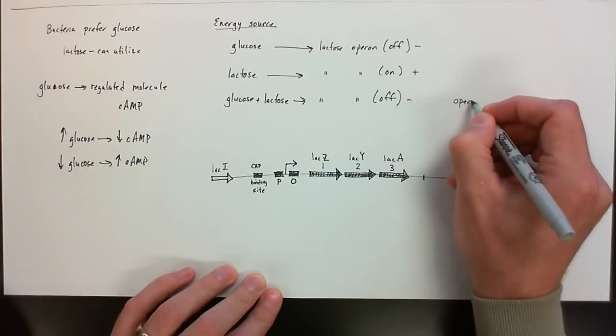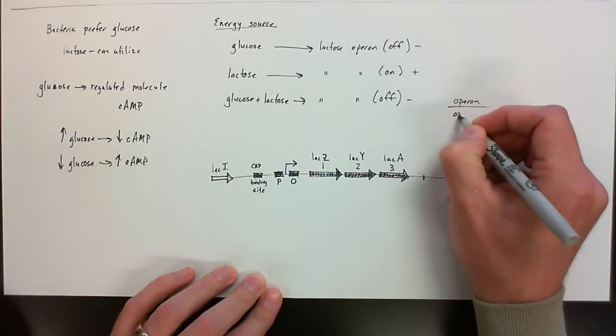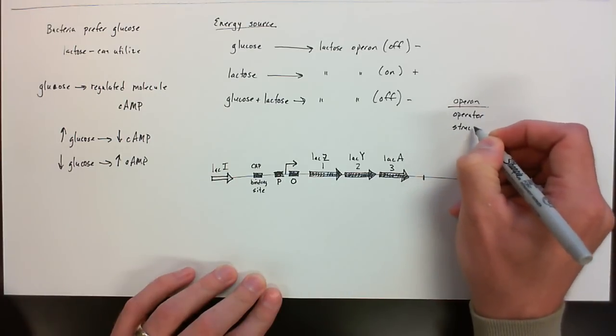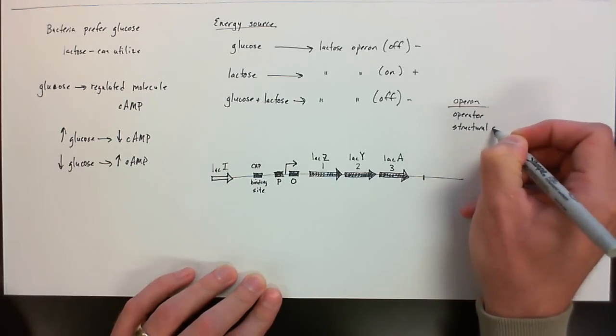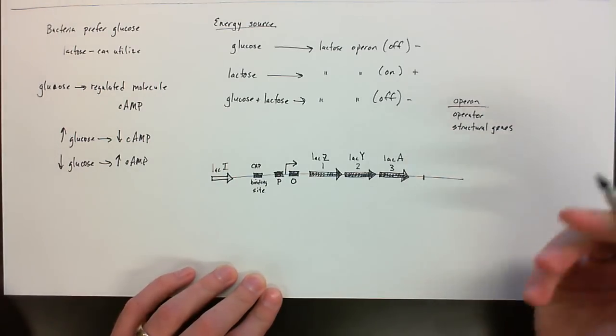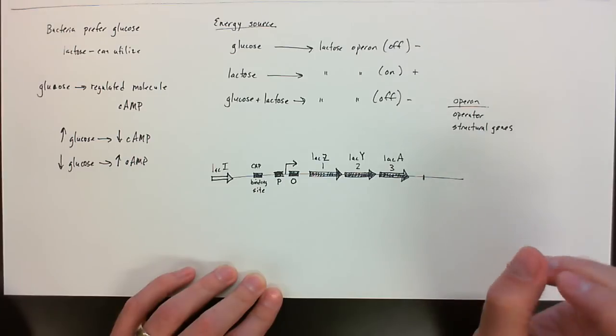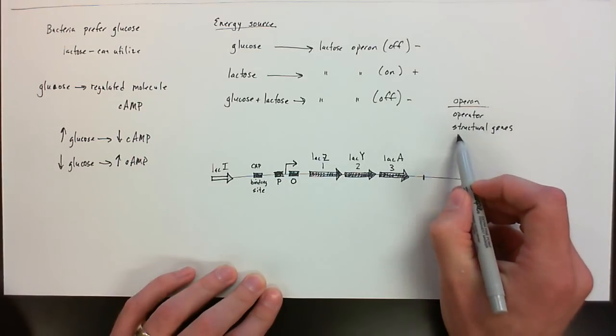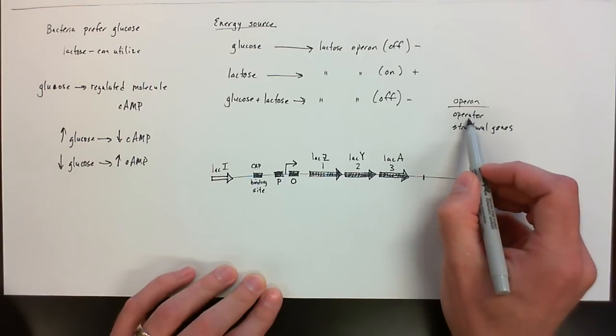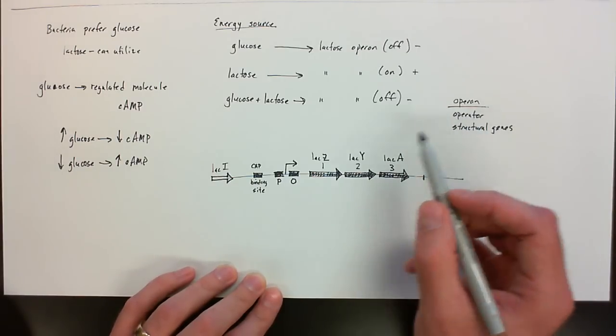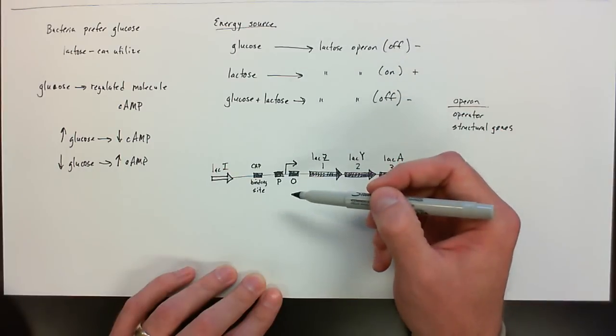So an operon has what we call an operator and the structural genes. If you remember, this operon is going to be turned on when it gets the signal to, and then it's going to produce the proteins necessary for a particular function. And those would be the structural genes. The operator is going to be the part of this operon that is important to actually control whether it's turned on and off.